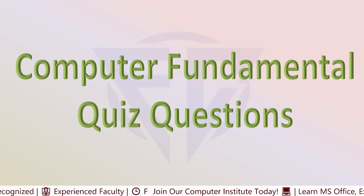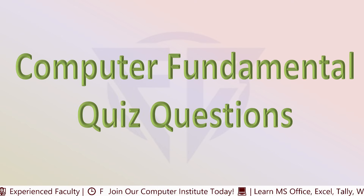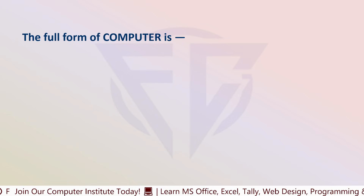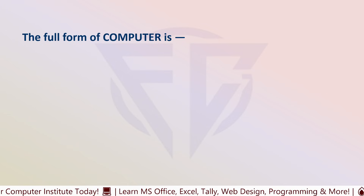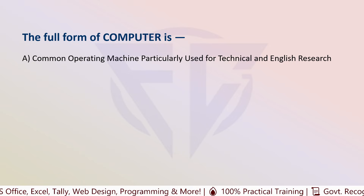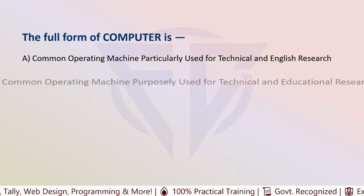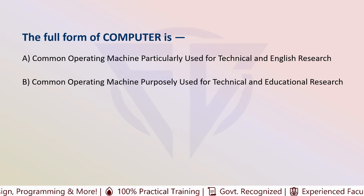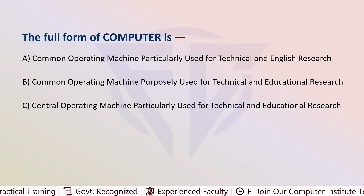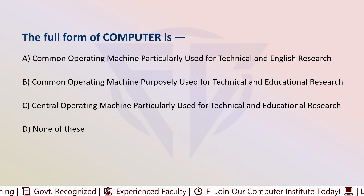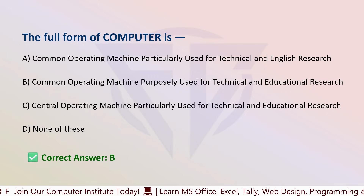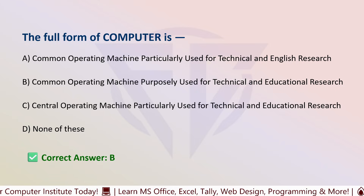Hello friends, today we are going to see Computer Fundamentals 50 quiz questions. So let's start. Your first question is: the full form of computer is — options are: A) Common operating machine particularly used for technical and English research, B) Common operating machine purposely used for technical and educational research, C) Central operating machine particularly used for technical and educational research, and D) None of these. The correct answer is B: Common operating machine purposely used for technical and educational research.